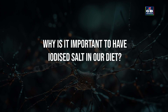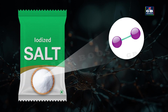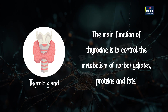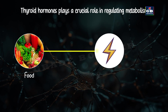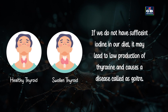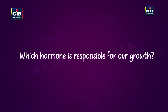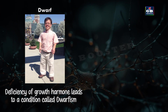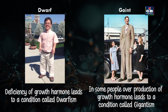We need iodine to make a hormone called thyroxin, made by the thyroid gland. Thyroxin controls how our body uses food for energy — that means it controls our metabolism. Lack of iodine reduces thyroxin production and causes goiter, a swelling in the neck. Growth hormone is made by the pituitary gland and controls height and bone growth. Too little causes dwarfism; too much causes gigantism.